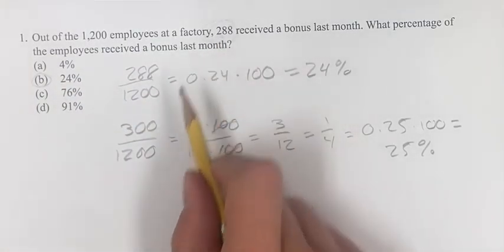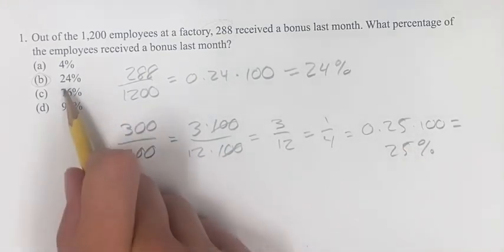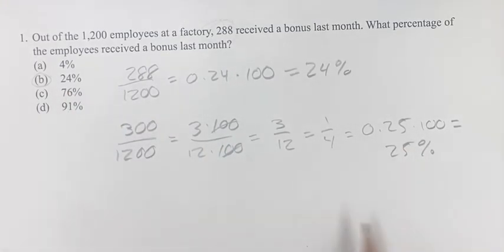We said earlier we're increasing 288 by a little bit to get to 300, so it's going to be slightly larger, which is what we see. 25% is a little larger than 24%, but either way, 24% is the answer. As always, thank you for liking and subscribing, and we'll see you in the next video.